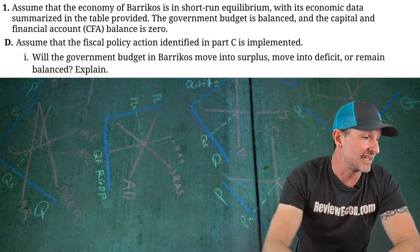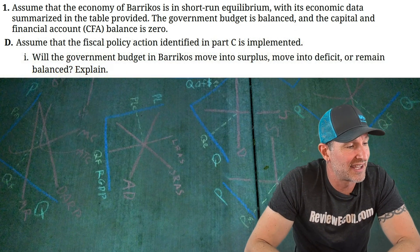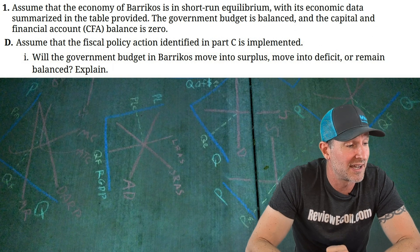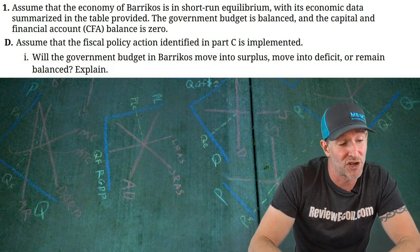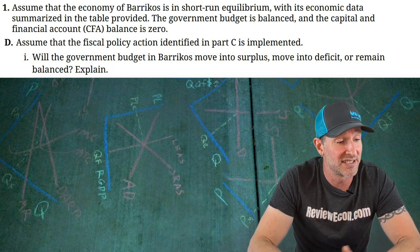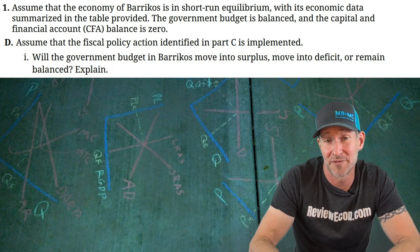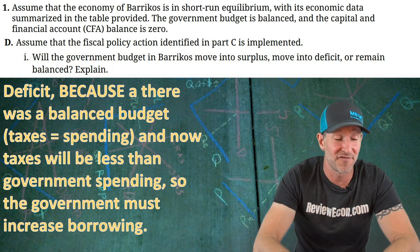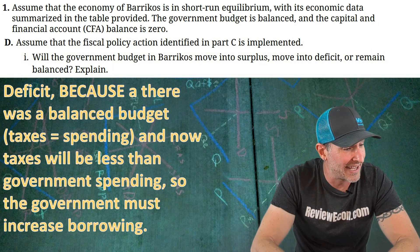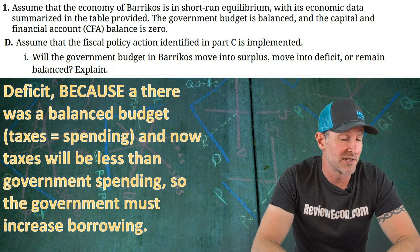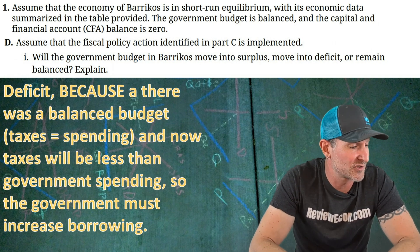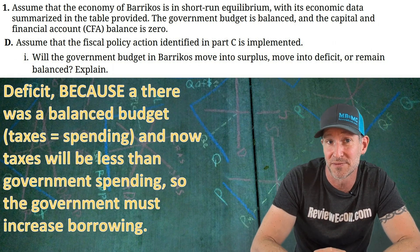On to Part D. Assume that the fiscal policy action identified in Part C is implemented. Will the government budget move to a surplus, a deficit, or remain balanced? My answer: it's going to be a deficit. That's because there was a balanced budget, meaning taxes equal spending, and now taxes will be less than government spending, so the government must increase borrowing.